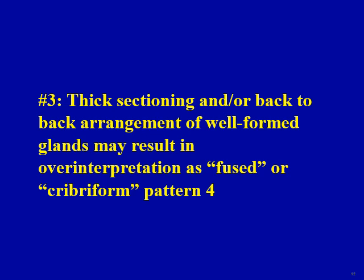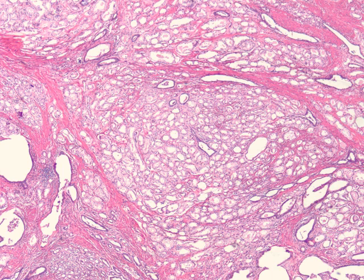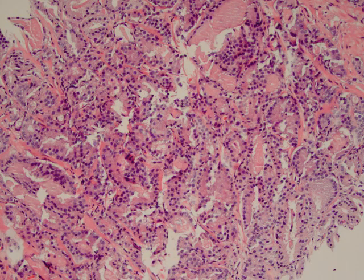A third important pitfall: thick sectioning and/or back-to-back arrangement of well-formed glands may result in a so-called pseudo-cribriform architecture or fused gland pattern, which may be over-interpreted as pattern 4. Here is a nice example where at low power you see back-to-back cancer glands creating almost a cribriform architecture, but at high power these glands are clearly discrete — you can draw a boundary around each gland — so it is important not to over-interpret this as pattern 4.